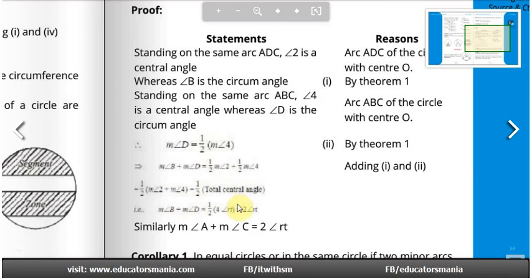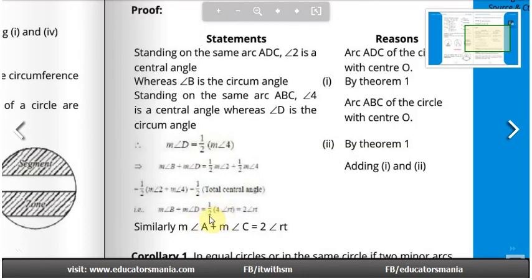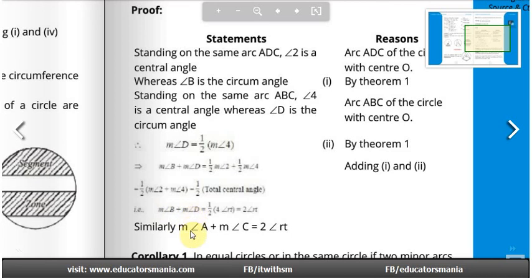4RT means 4 times 90, which is 360 degrees — the total central angle for a complete rotation. So taking half of 4RT gives 2RT, meaning major angle B plus major angle D equals 2RT. We have thus proved that angle B plus angle D are supplementary, and similarly angle A plus angle C are also supplementary.